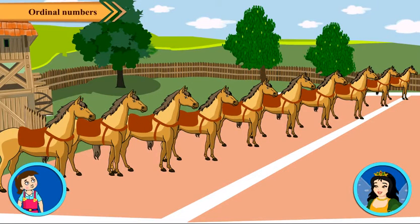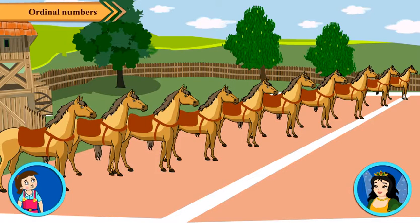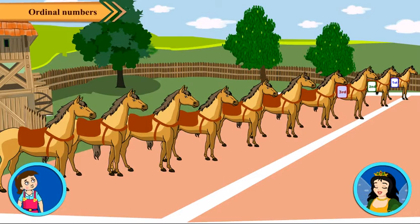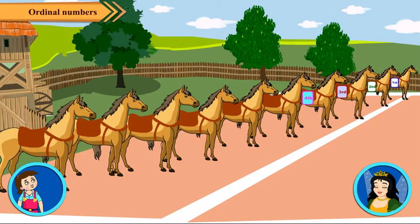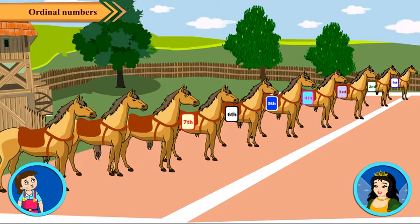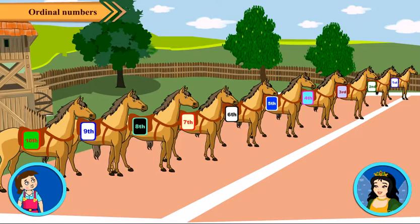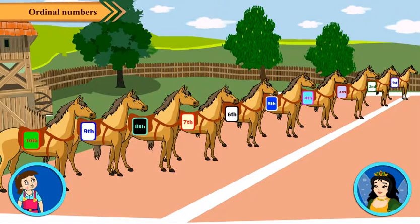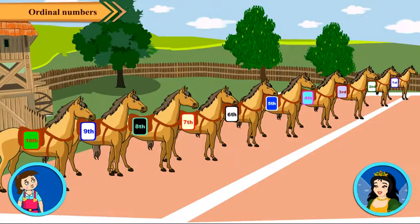The boy at teacher's table is 1st and the last girl is 10th. We write ordinal numbers as 1st, 2nd, 3rd, 4th, 5th, 6th, 7th, 8th, 9th, 10th, etc. Okay. Bye-bye, Neha.